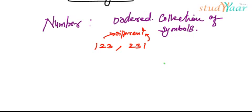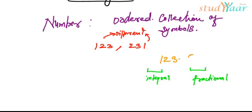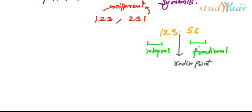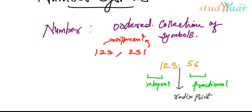A number has basically two parts: it has an integral part and it has a fractional part. If I say 123.56, then 123 is known as the integral part — everything that comes before the radix point. This dot is called the radix point. Everything before the radix point is the integral part, and everything after the radix point is the fractional part.